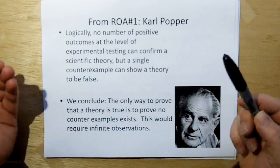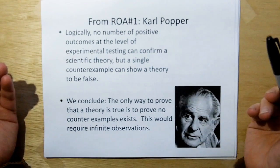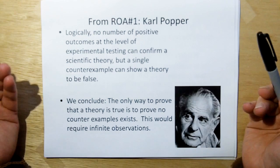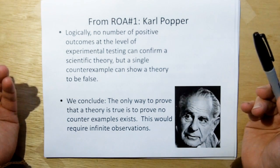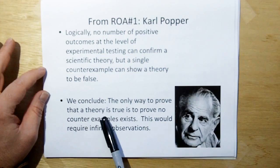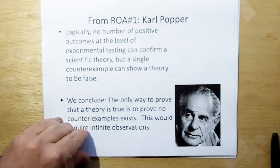No number of positive outcomes at the level of experiment can confirm a scientific theory, but a single counterexample can show a theory to be false. But if you have infinite observations, that means there's no counterexamples left. And therefore, if you have infinite observations, then you can prove a theory correct.